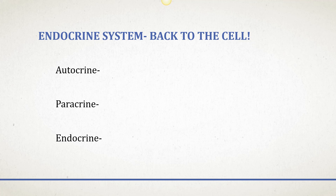These basic definitions all come back to the cell. The endocrine system involves organs and glands producing hormones, but the cells within them are actually the ones producing the hormones. Autocrine is when chemicals are released by a cell to stimulate the cell itself — "auto" means self — so it's a kind of self-stimulating chemical signal.